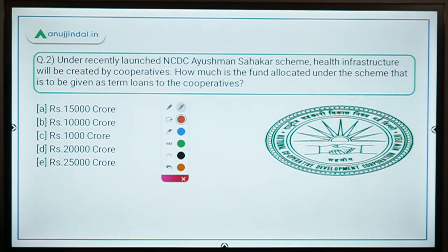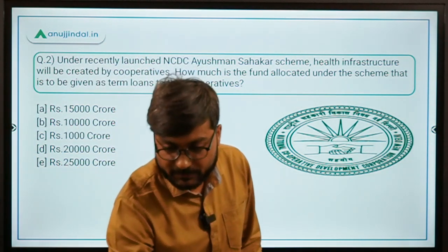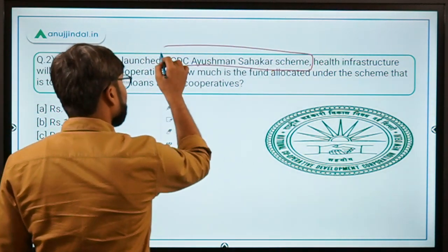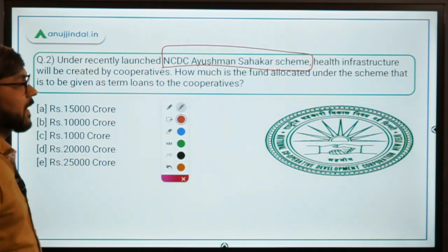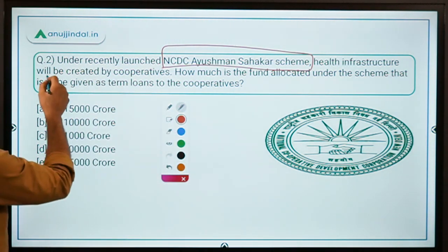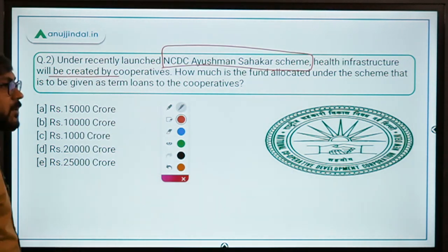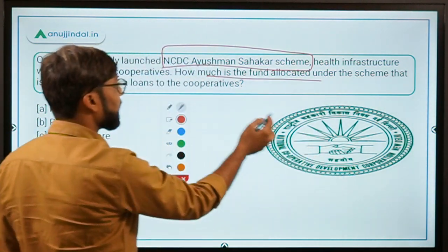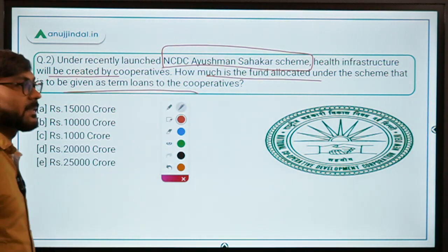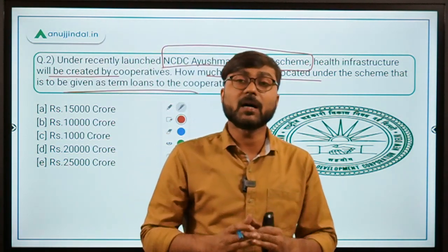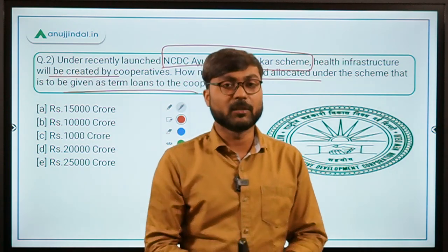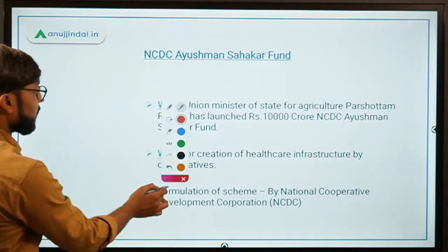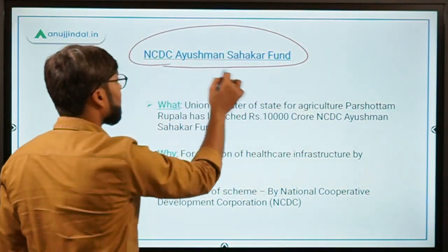Question number two is about a new scheme launched by the National Cooperative Development Corporation — the NCDC Ayushman Sahakar Scheme. Under this scheme, health infrastructure will be created by cooperatives. The question asks: how much fund has been allocated under this scheme to be given as term loans to cooperatives for building health-related infrastructure?